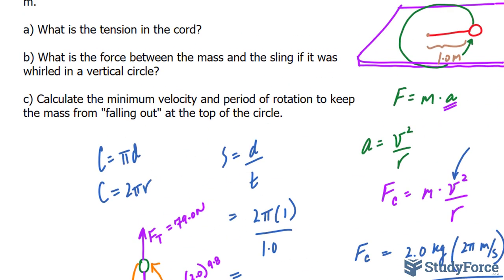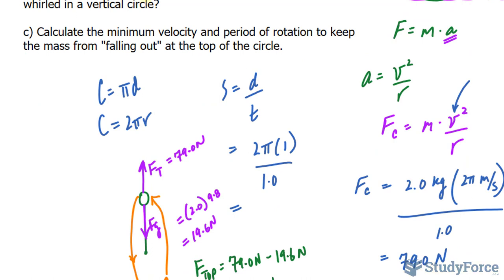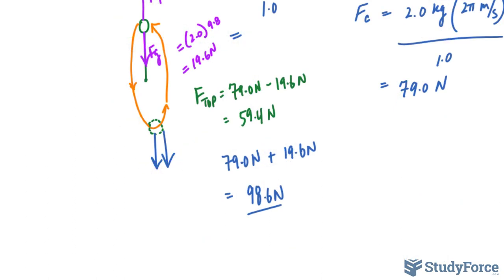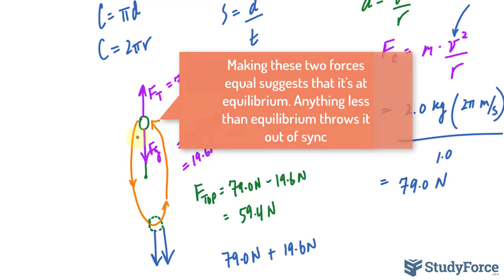Let's go on to question C. Calculate the minimum velocity and period of rotation to keep the mass from falling out at the top of the circle. So we want to find out the minimum velocity that this mass needs to continue having to maintain this circular motion. For us to calculate this, the tension at the top of the cord must equal to the force due to gravity. So these two forces, this one and this one, need to be equal to each other for us to find the absolute minimum.